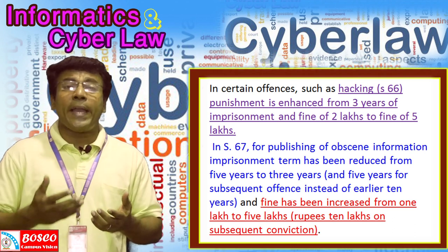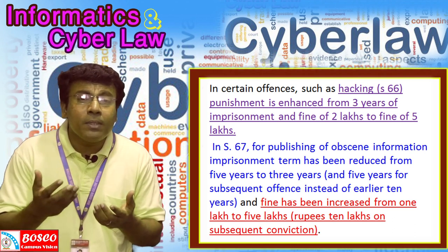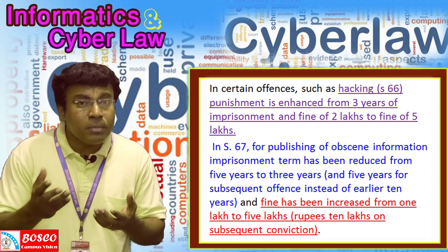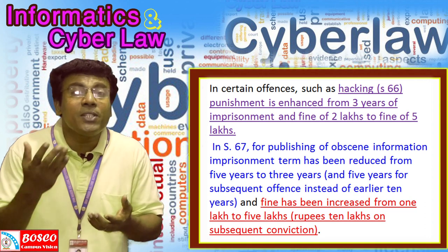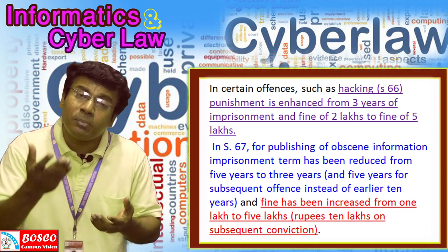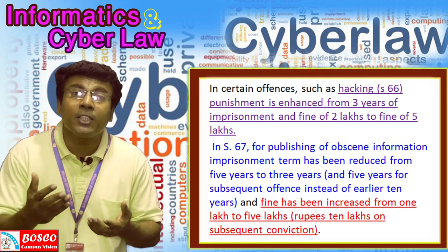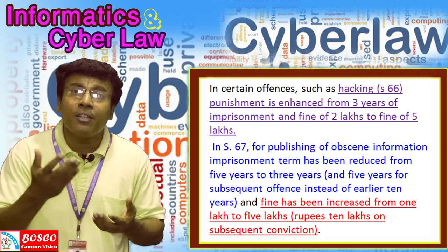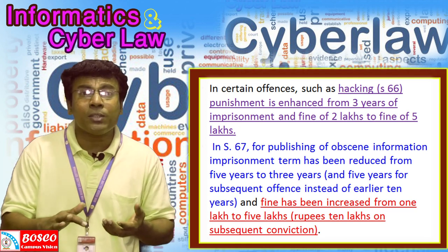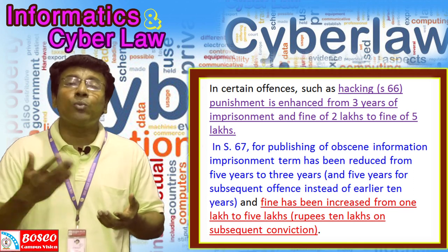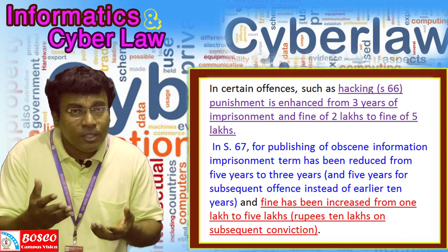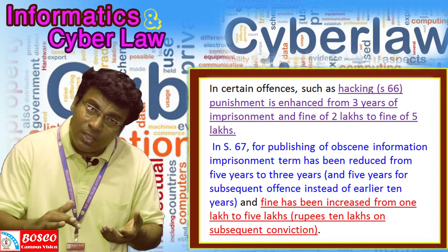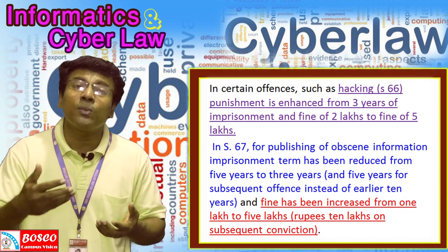Section 67 of IT Act 2000 contained the offense of publishing obscene information. The punishment for publishing obscene information for the first instance was imprisonment for 5 years and a fine of 1 lakh. This has been changed: the imprisonment has been reduced from 5 years to 3 years and the fine has been increased from 1 lakh to 5 lakhs. The penalty for a subsequent instance was imprisonment for 10 years and a fine of 2 lakhs, which has been changed to 5 years imprisonment and a fine of 10 lakhs.